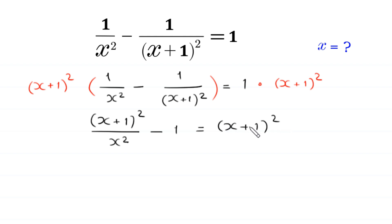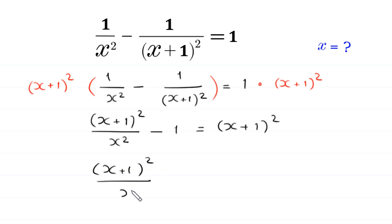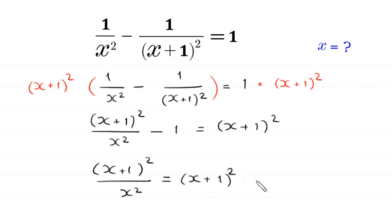Now we move this negative 1 to the right hand side. Then this equation will become (x plus 1) whole squared divided by x squared is equal to (x plus 1) whole squared plus 1.